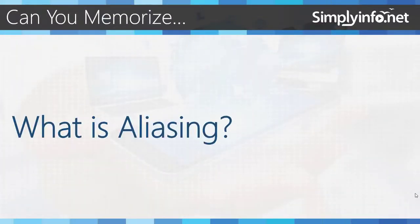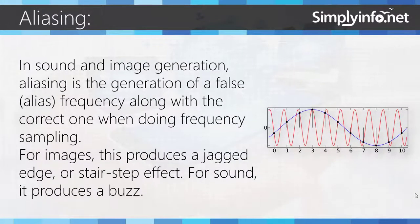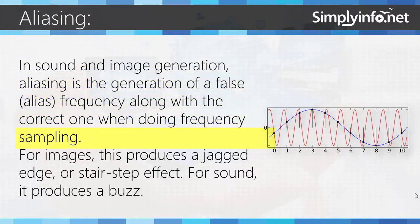Can you memorize what is aliasing? In sound and image generation, aliasing is the generation of a false alias frequency along with the correct one when doing frequency sampling. For images, this produces a jagged edge or stair-step effect. For sound, it produces a buzz.